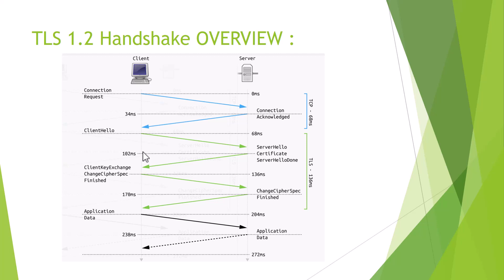When the client and server communicate, the TLS Handshake begins after the TCP Handshake. The TCP three-way handshake happens first — that's basic communication to open the connection. Once the connection is open, we proceed to the SSL/TLS Handshake. The first step of the TLS Handshake is the Client Hello.